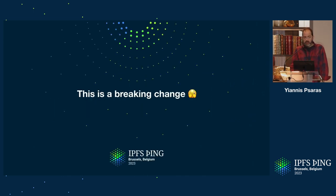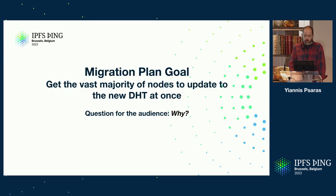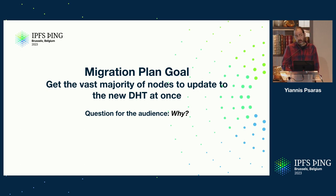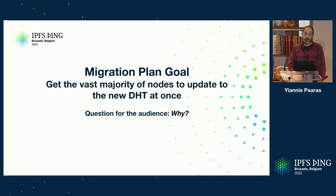This is a breaking change, and these changes are a little bit painful — they cannot just be included in a release, because everyone who has not upgraded is going to be excluded. So we need a migration plan, and we need to get the vast majority of nodes to upgrade to the new DHT at once. Why is that important? The answer is security: if you have a small fraction of nodes upgrading to the new scheme, it's much easier to build that new network with fake identities and kind of take it over before the majority have upgraded.